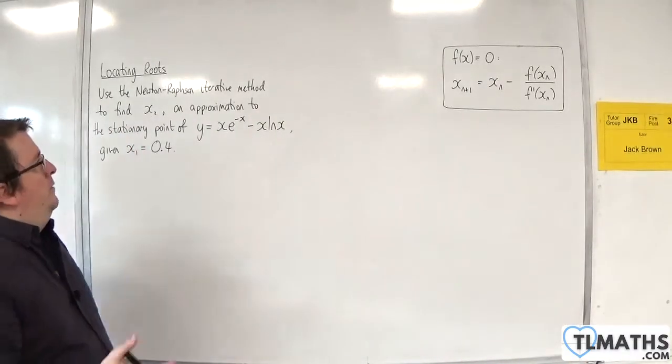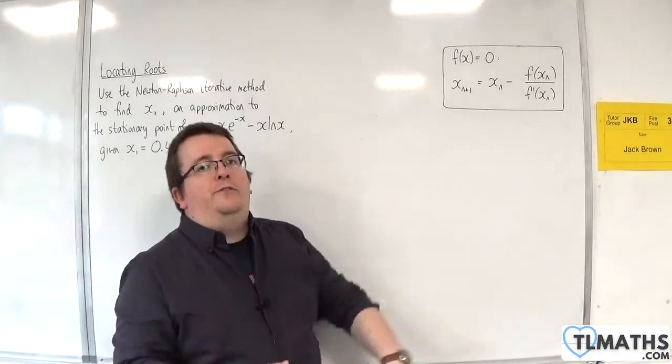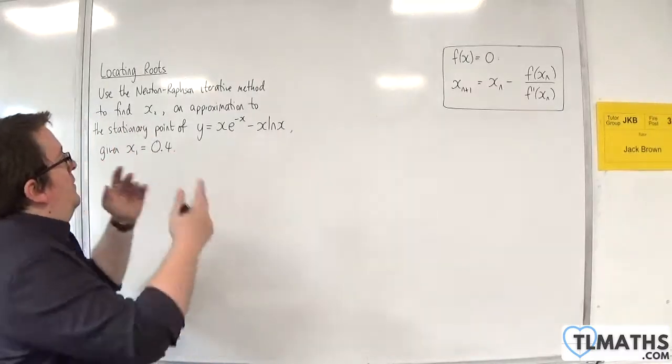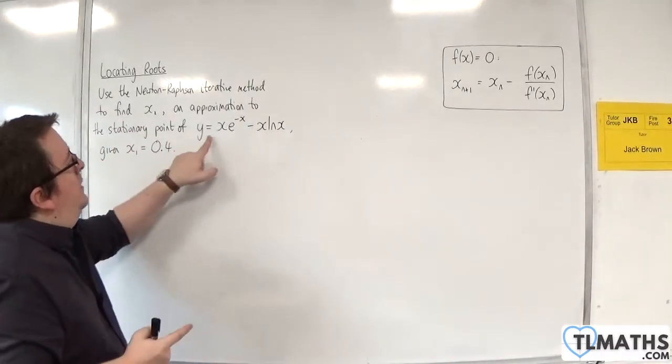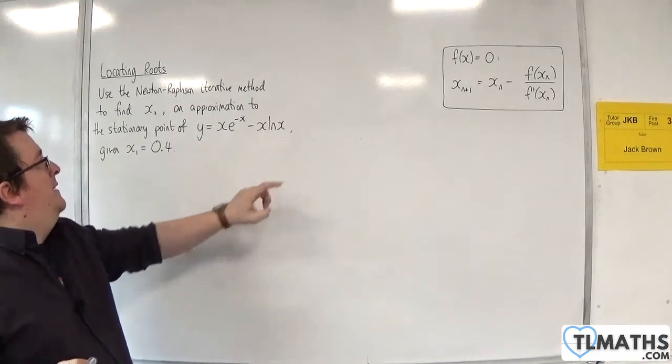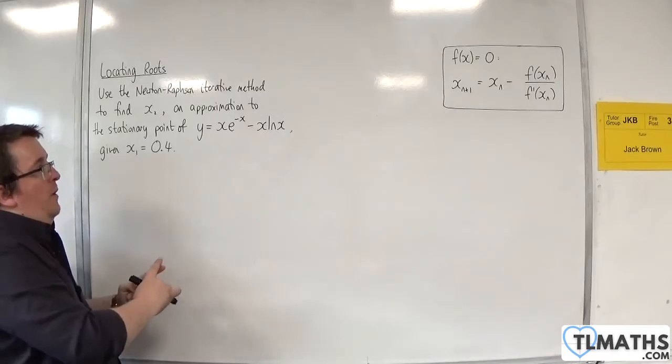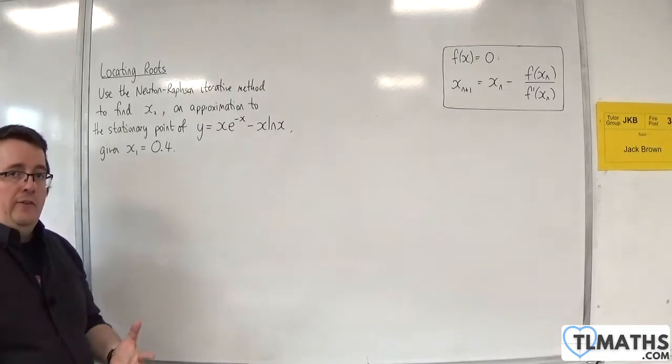Now, the thing is that the Newton-Raphson method we've been using to find roots. This question is not asking to find the root of that, it's asking for the stationary point. So the stationary point is found when dy by dx is equal to 0.